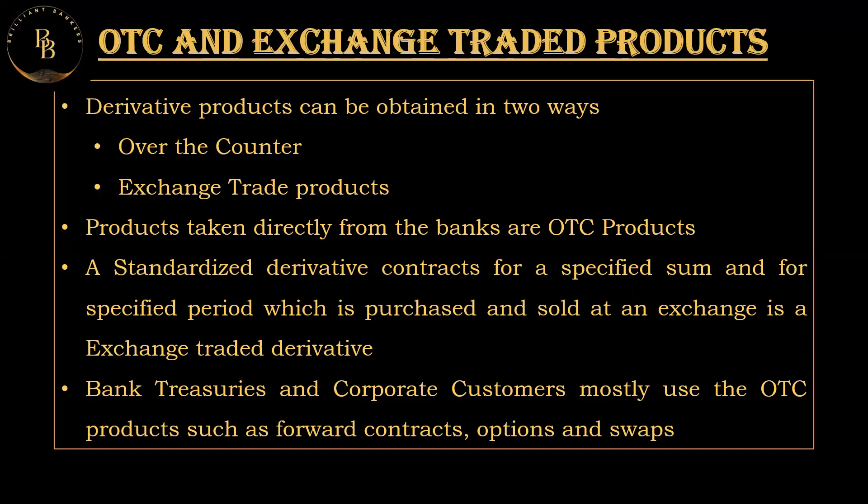Exchange-traded products (ETPs) are like items you buy and sell on a public market such as a shopping mall. These are financial products traded on an organized exchange like the NSE and BSE. For example, if you want to buy shoes, you go to a store where prices are determined by the market. Similarly, exchange-traded products include stocks, exchange-traded funds, and some derivatives — they are standardized and prices are determined by market supply and demand.